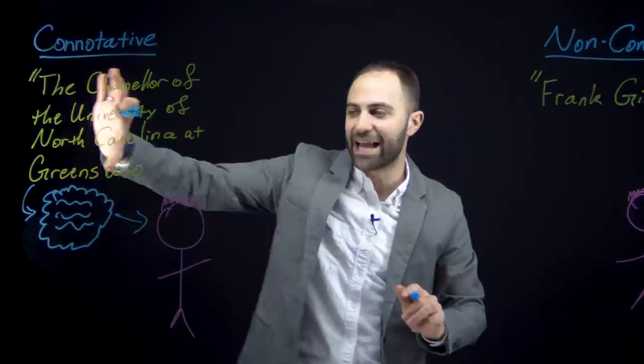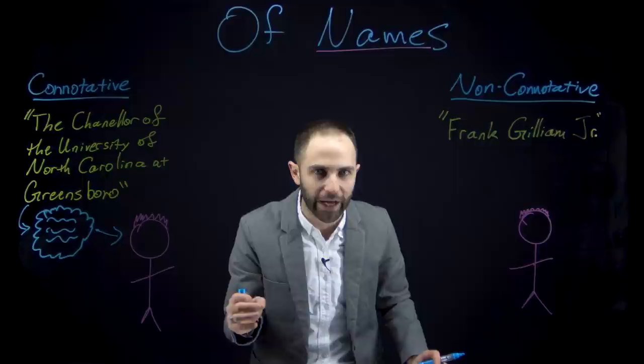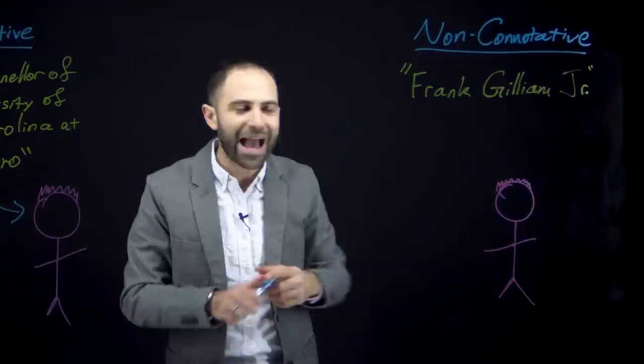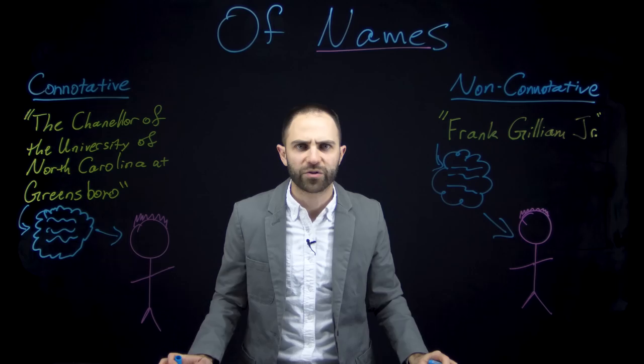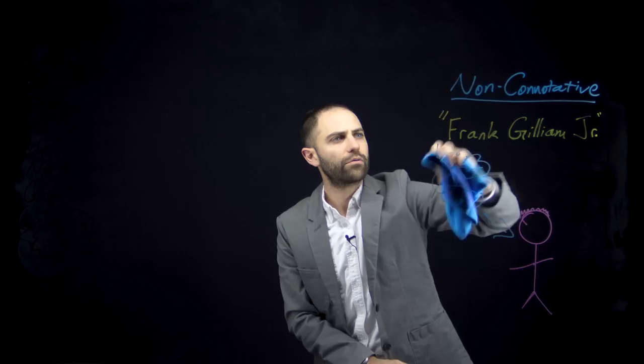But it's going to turn out that this can't be exactly right. Gottlob Frege, who lived in Germany many years after Mill, is going to introduce some cases that show that even proper names have to involve something else — some extra bit of information, some extra level of meaning by which we get to the thing signified. And we'll get to that next week in this course.